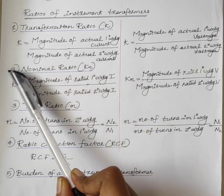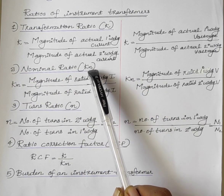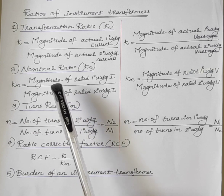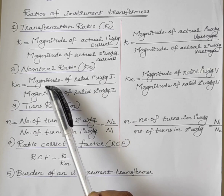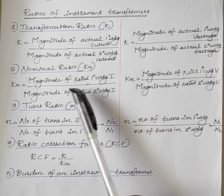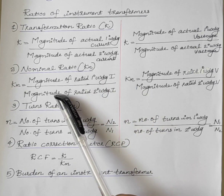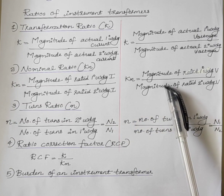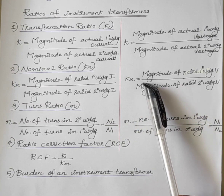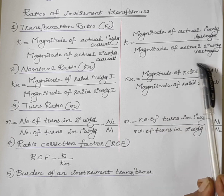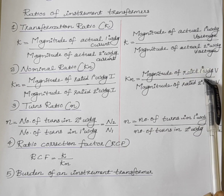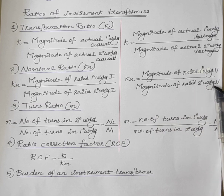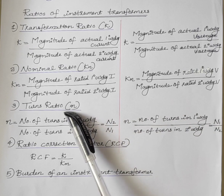Next is the nominal ratio, represented by KN. The nominal ratio of a current transformer is the ratio of the magnitude of rated primary winding current to the magnitude of rated secondary winding current. In the case of a potential transformer, KN is the ratio of the magnitude of rated primary winding voltage to the magnitude of rated secondary winding voltage.